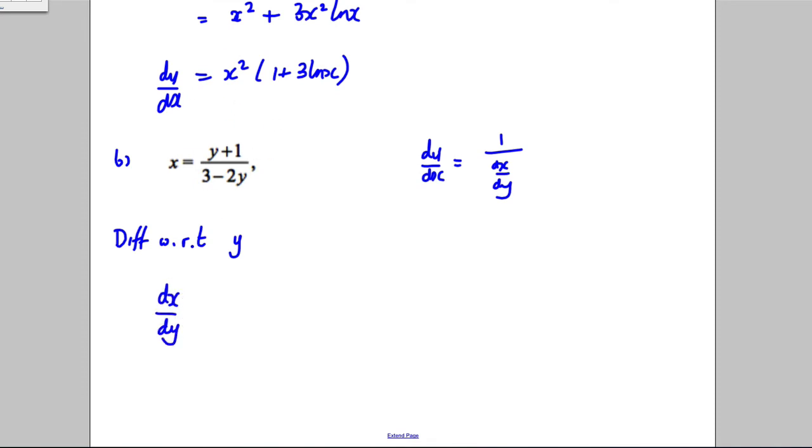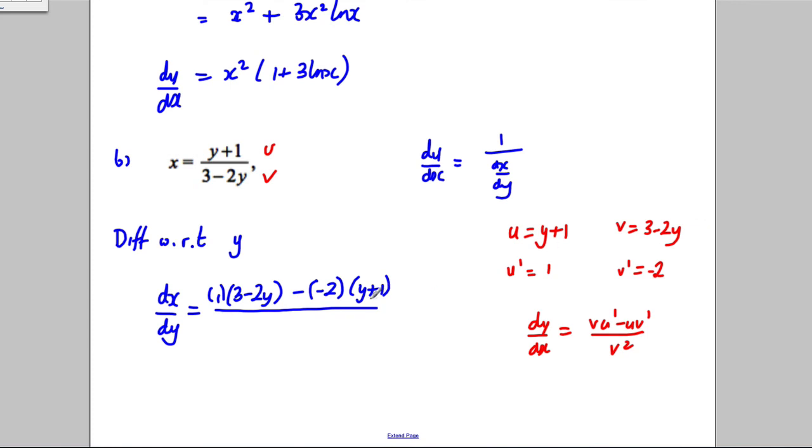dx/dy is the differential of this quotient. u is y plus 1 so u' is 1, and v is 3 minus 2y so v' is negative 2. The quotient rule says dx/dy equals v times u' minus u times v' all over v squared. That's 3 minus 2y times 1 minus negative 2 times y plus 1, all over 3 minus 2y squared.